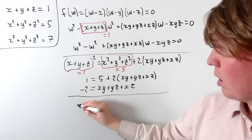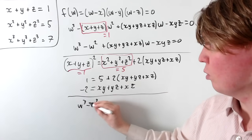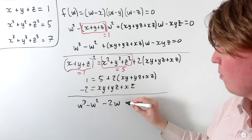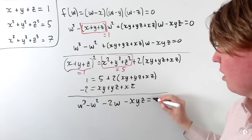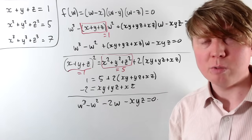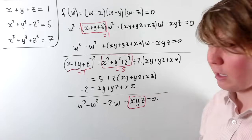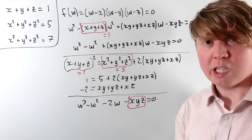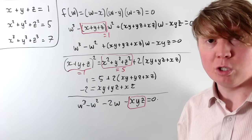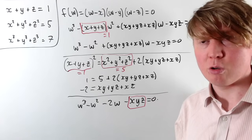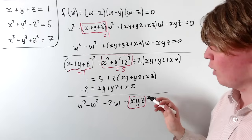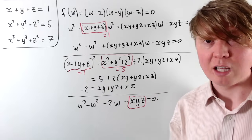Substituting this back, our cubic is now w³ − w² − 2w − xyz = 0. We're getting closer to determining the cubic equation — the only unknown left is the value of xyz. We could try expanding (x + y + z)³ to extract an xyz term, but that turns out to be quite complicated, so let's clear some board space and use a neater shortcut to find xyz.